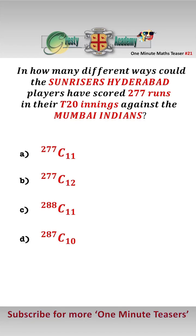No doubt all anybody wants to know is how many different ways could the Sunrisers players have scored 277 runs in their T20 innings. This is an identical objects into distinct containers problem, where the identical objects are the runs and the distinct containers are the players.